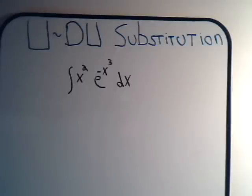But whenever you're confronted with an integral, your first attempt should always be: can it be solved with a U-DU substitution? And here we've got the integral of x squared times e to the minus x cubed dx.